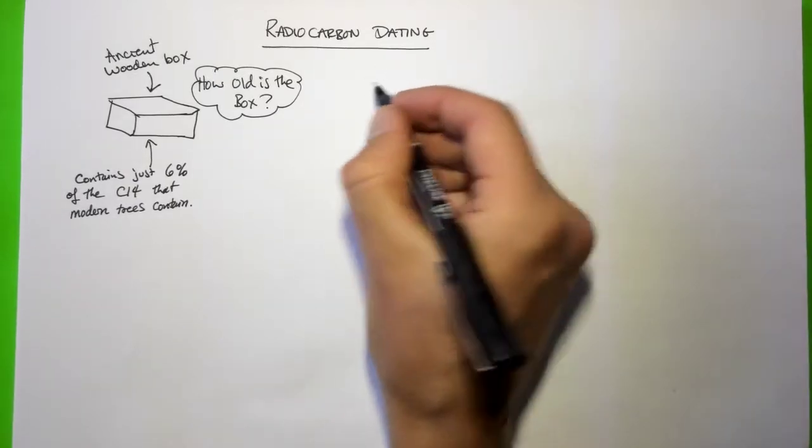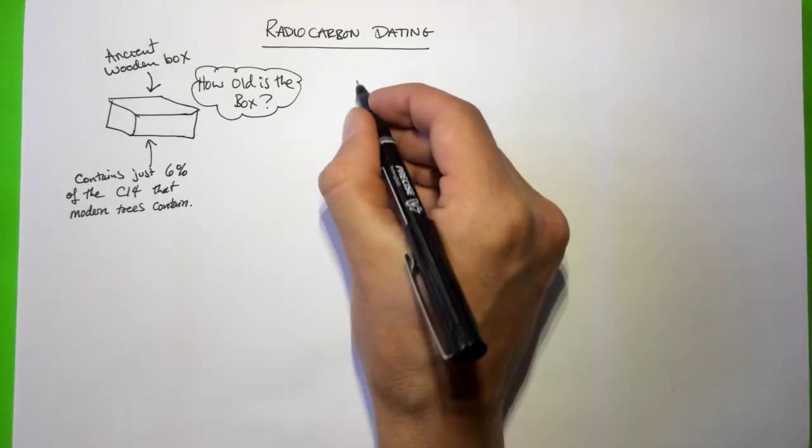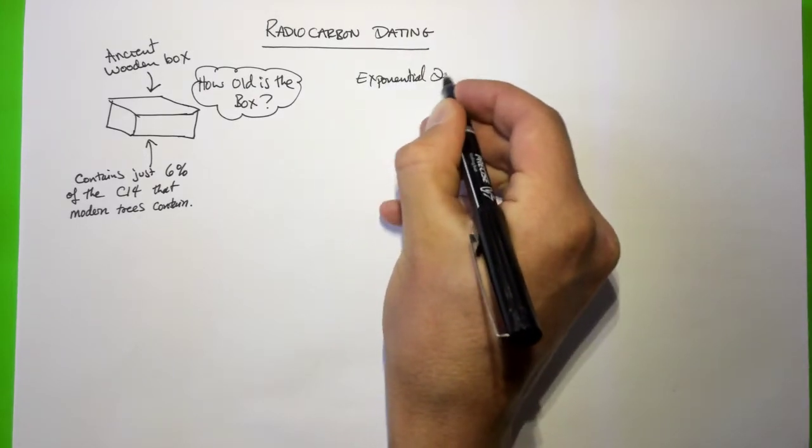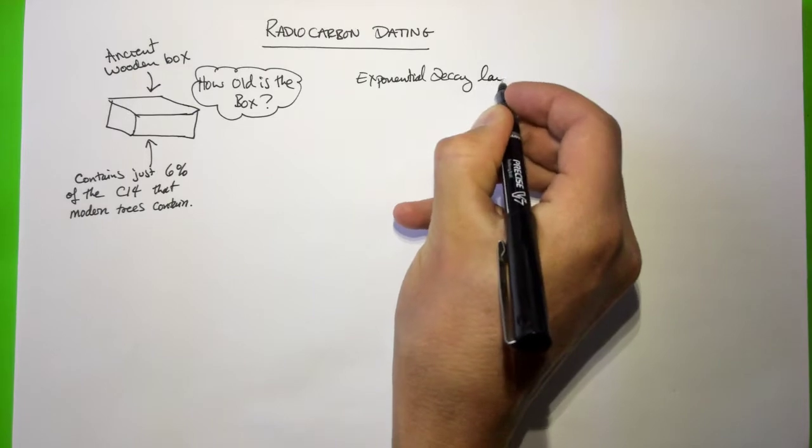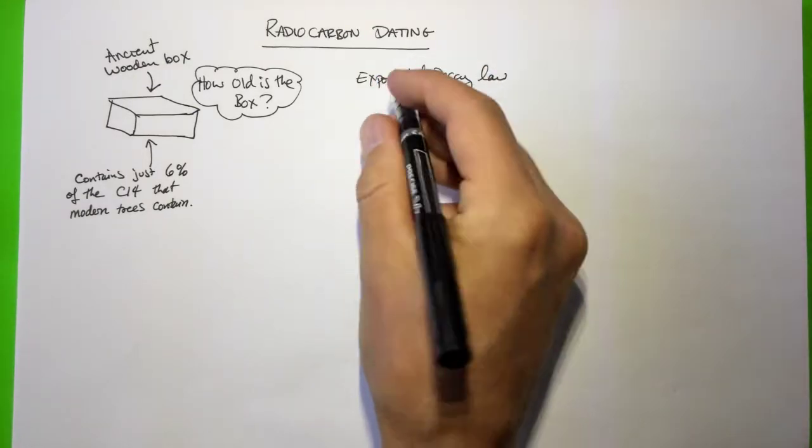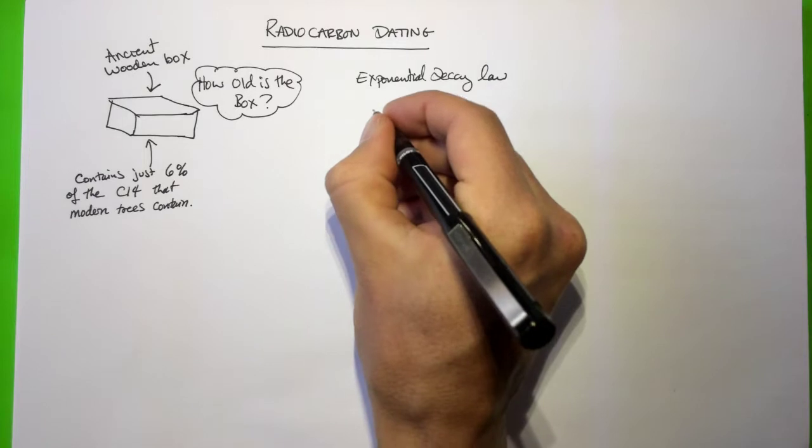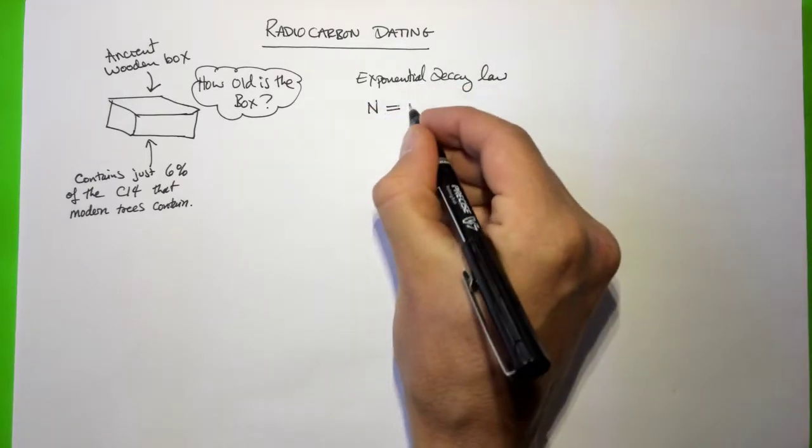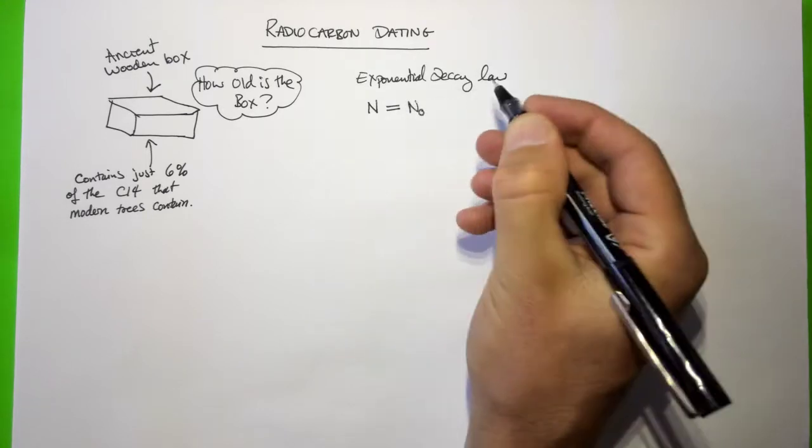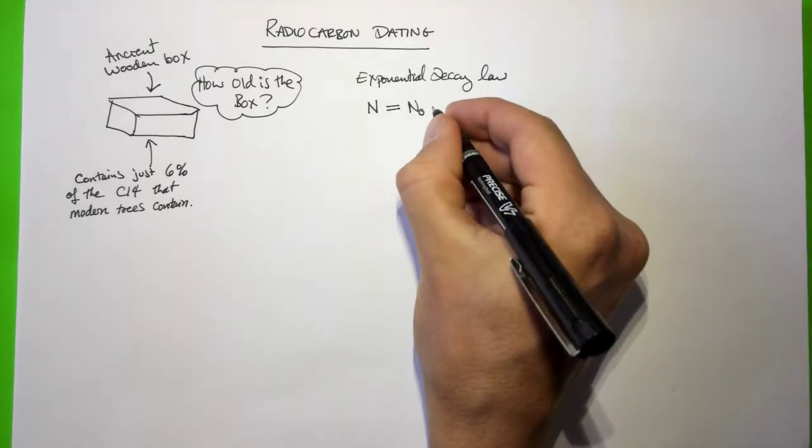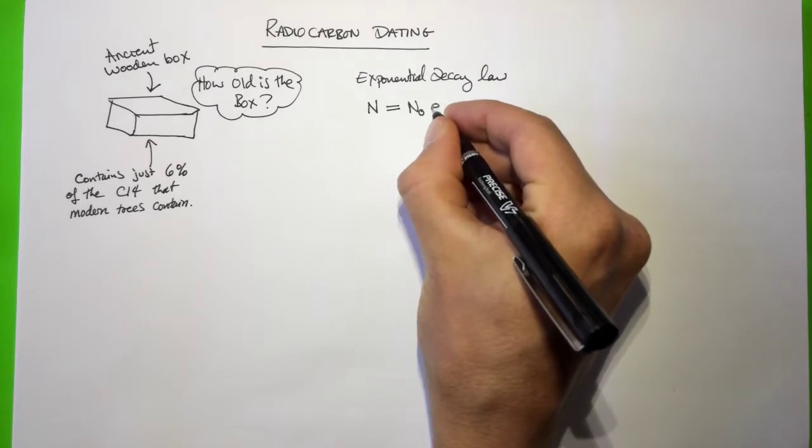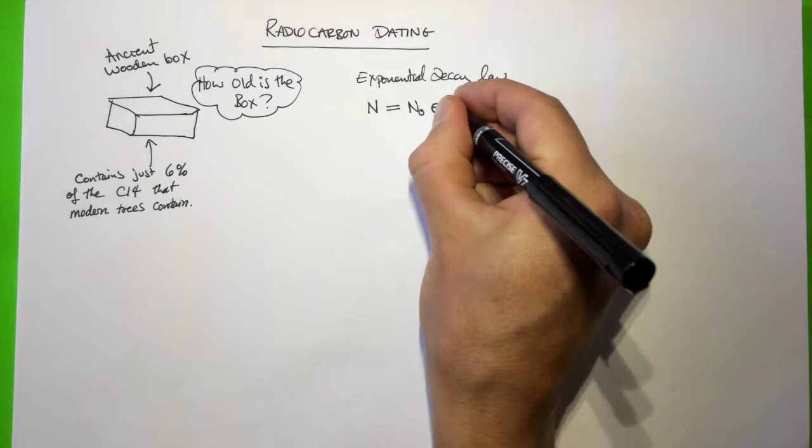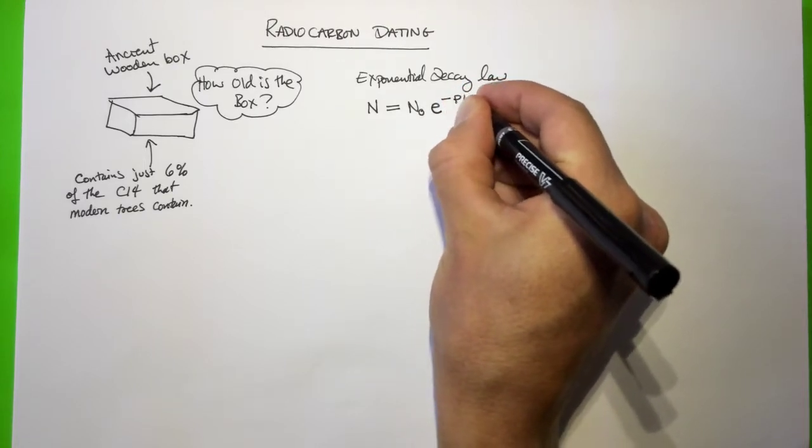So we're going to use the principle of the exponential decay law, which can be written one of two ways. The exponential decay law says that the number of atoms remaining after a certain amount of time t is equal to the number of atoms that were originally present multiplied by E, which is the Euler's constant or the exponential constant, to the power minus Pt.